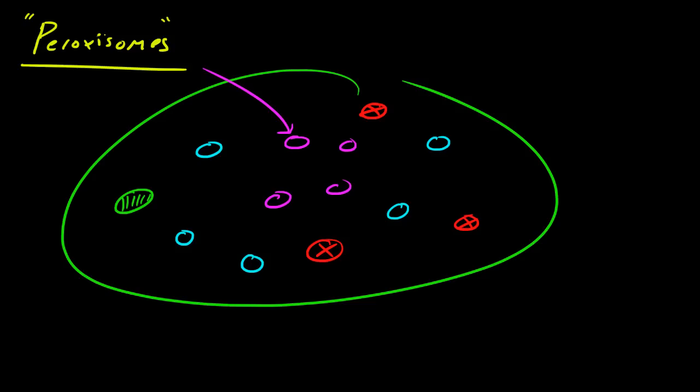However, peroxisomes differ in that peroxisomes specialize in breaking down lipids, which we know are just fats. And of course whenever a cell breaks down a lipid or a fat it could use those molecules for energy and to do other stuff later on.